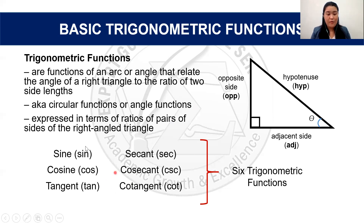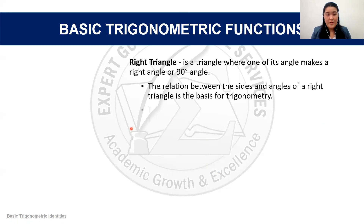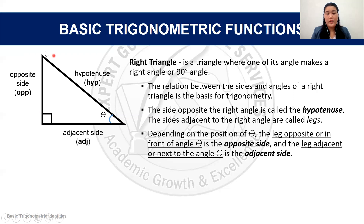So let's talk about the right triangle. As I mentioned before, the right triangle is the basis for trigonometry. The side opposite of the right angle — denoted by the small square — is called the hypotenuse, which is the longest side among the three sides. The sides adjacent to the right angle are called the legs.